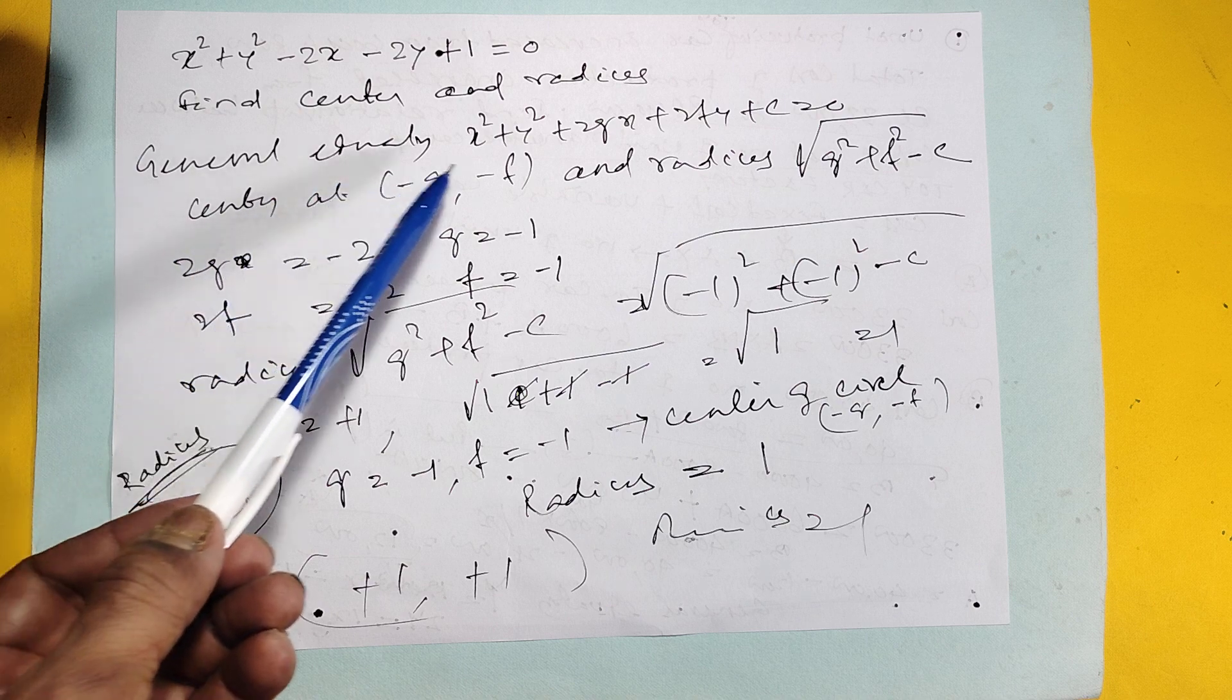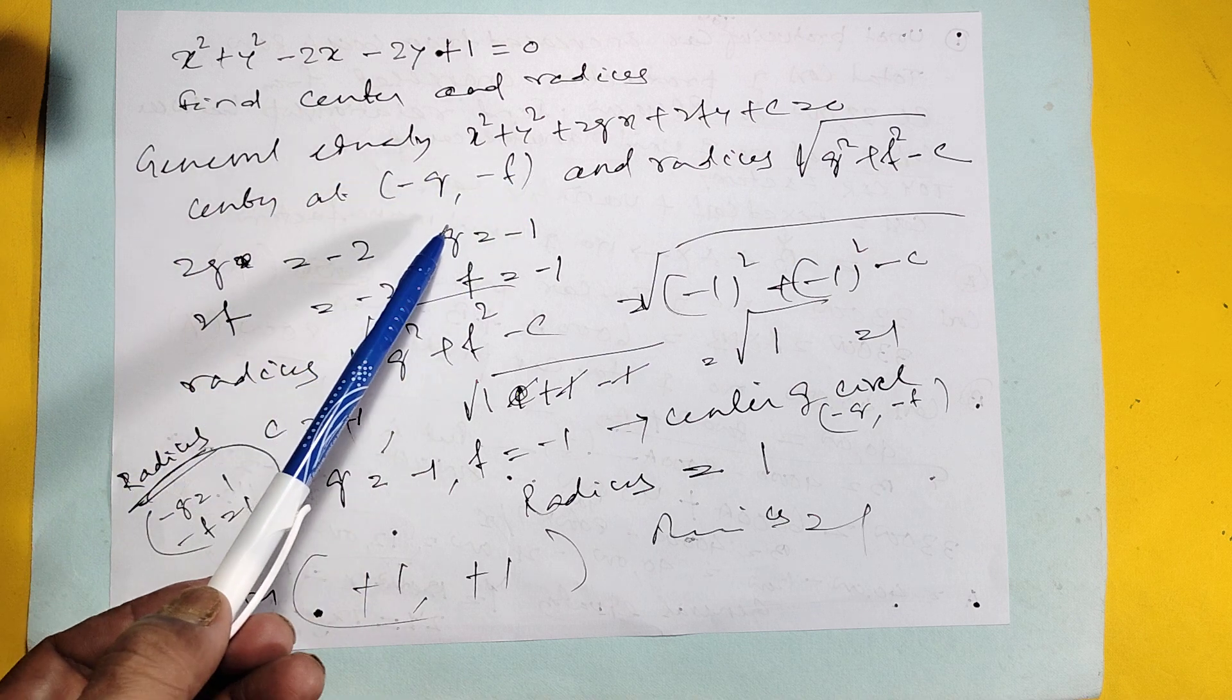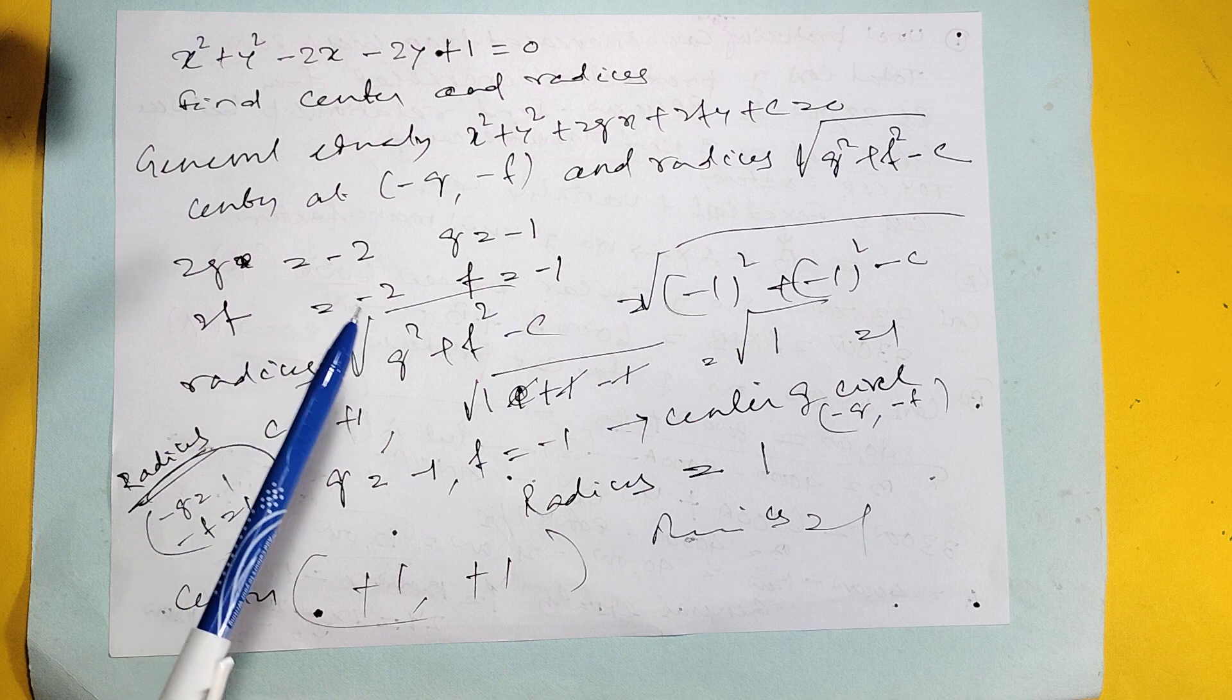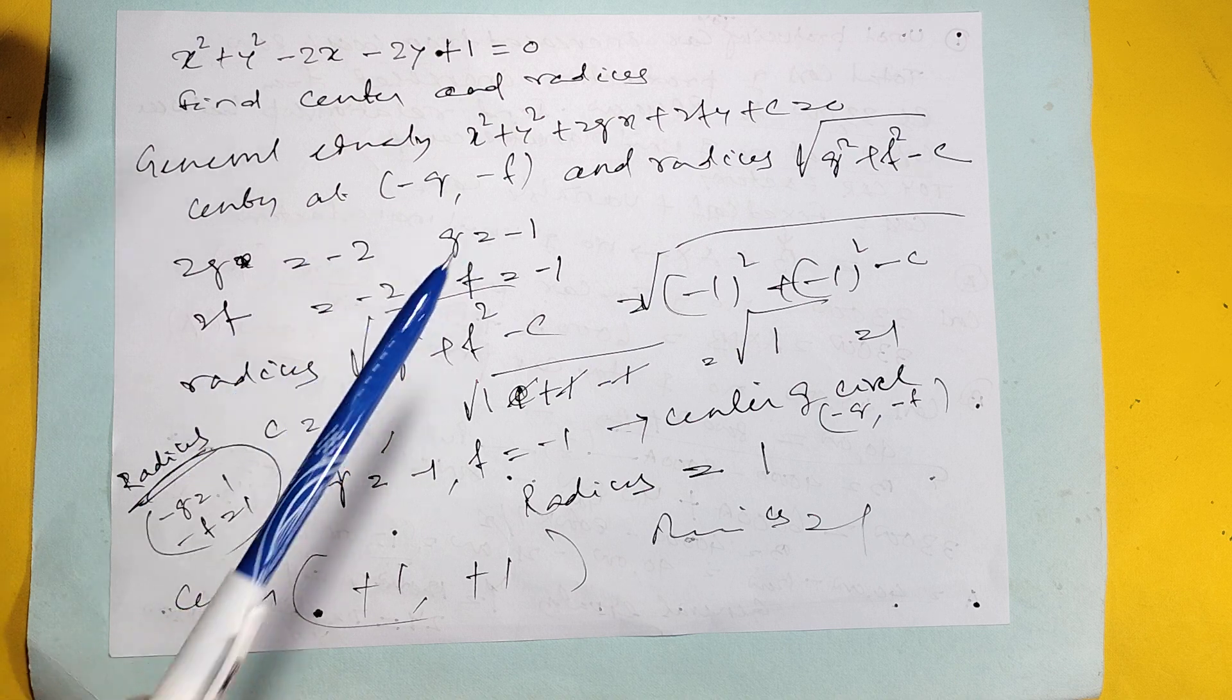The center is negative G, negative F. Here G is negative 1, F is negative 1. So center is 1, 1, because negative G is negative negative 1, which is 1.